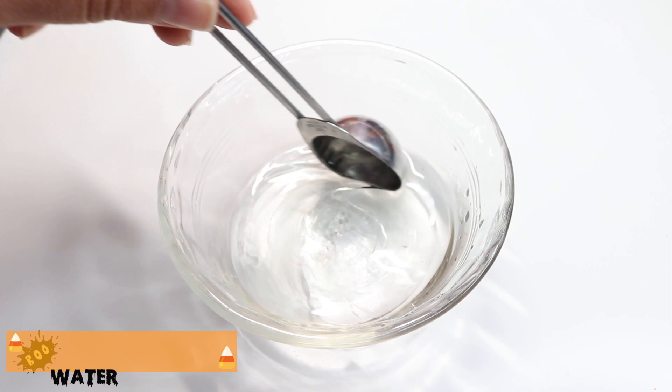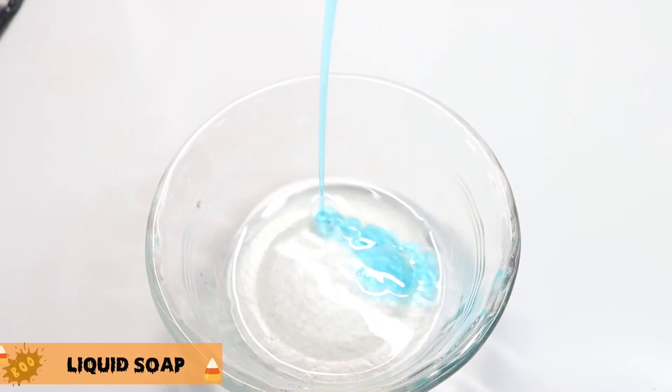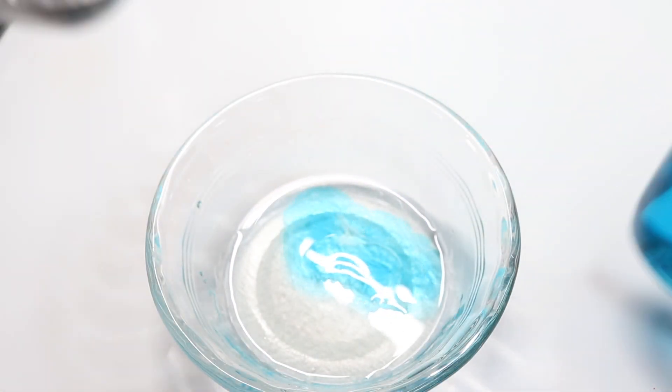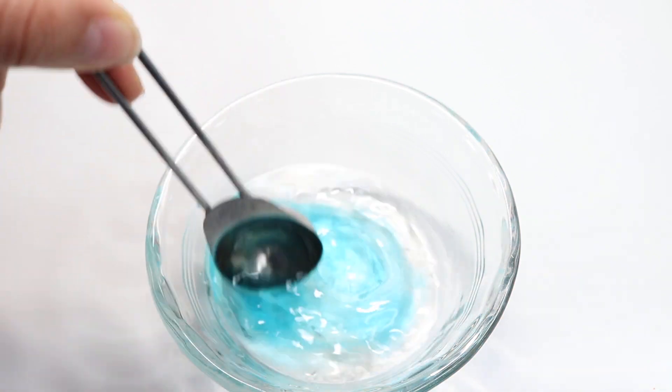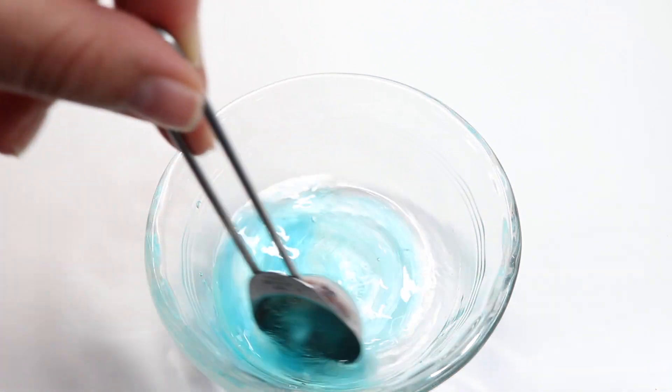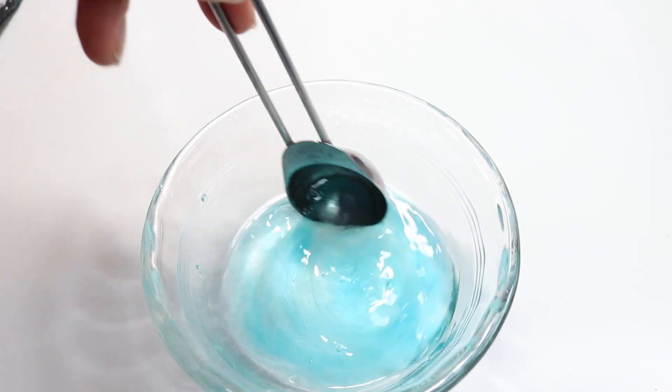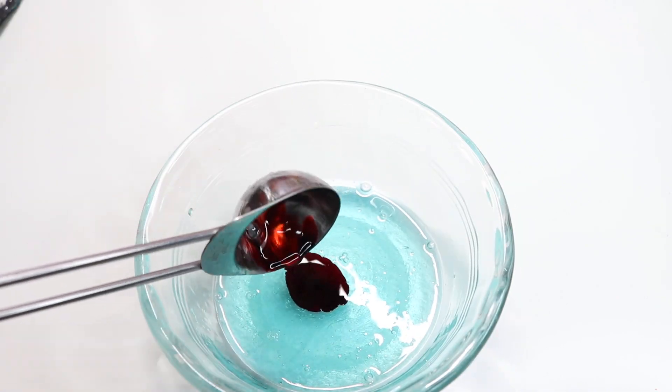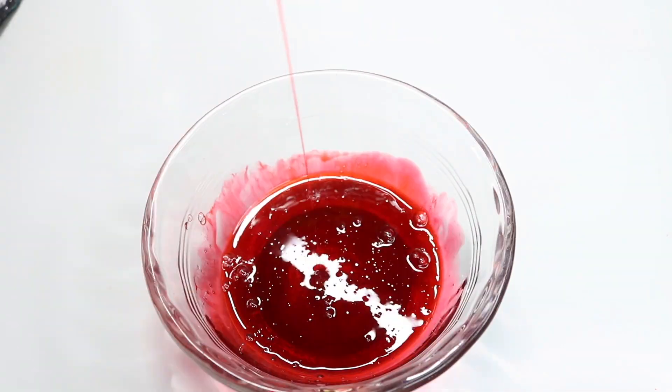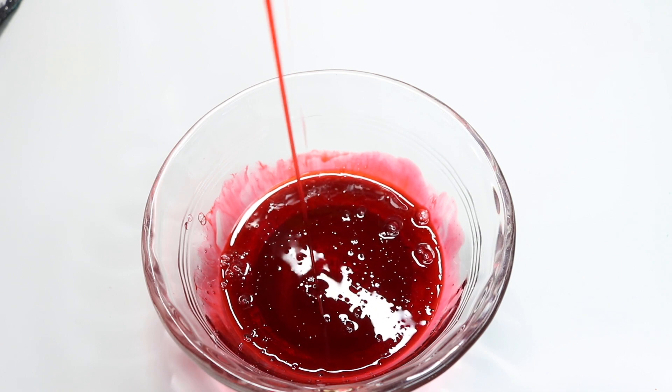I don't think this would be a final hack video if I didn't share with you guys another blood recipe. What you're going to need is some water, some dish soap, some corn syrup, red food coloring, and you can keep it as red as you'd like depending on the consistency. This is the way it turns out.